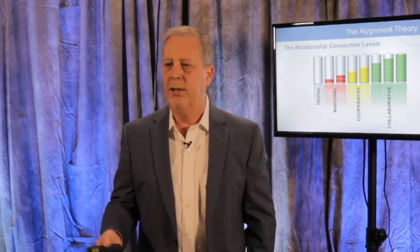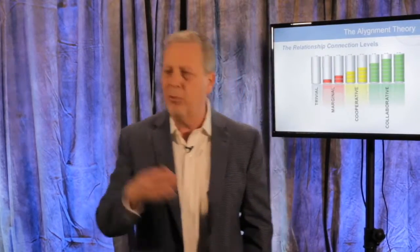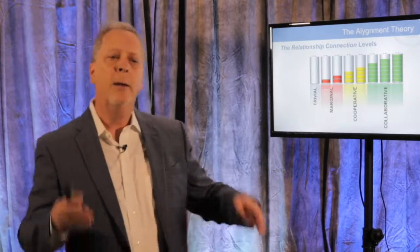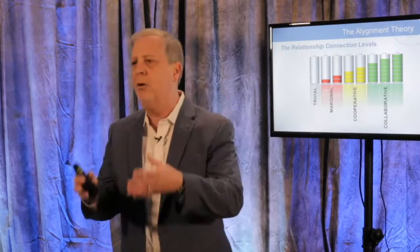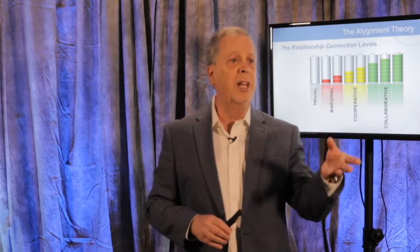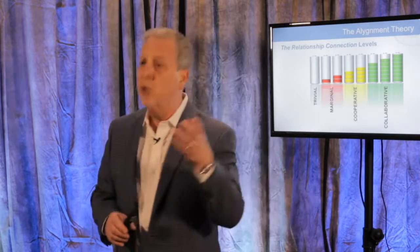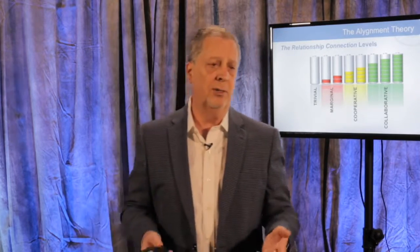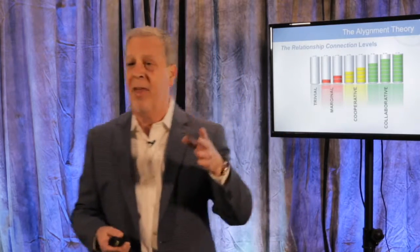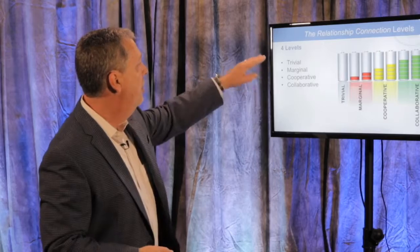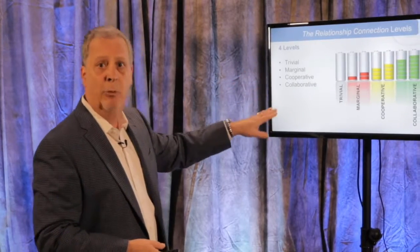Today, for the next several minutes, I want to share why this model will help you re-categorize where your relationships are. What we found is that a lot of people think a great relationship is one where you can talk to your customers without necessarily getting the business — and I'm going to push back on that. There are four levels: trivial, marginal, cooperative, and collaborative.